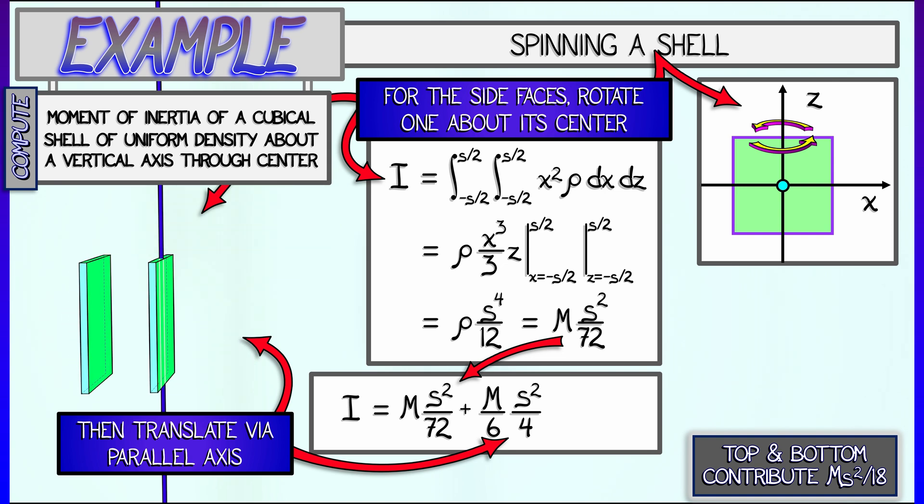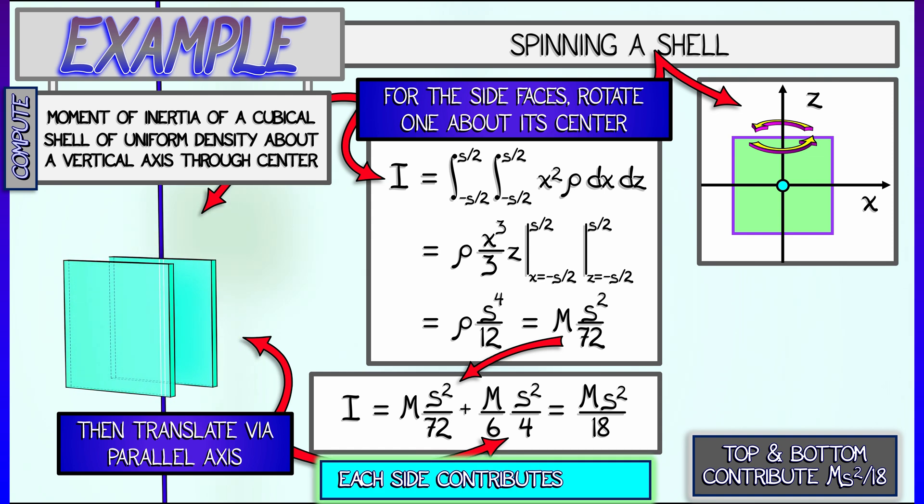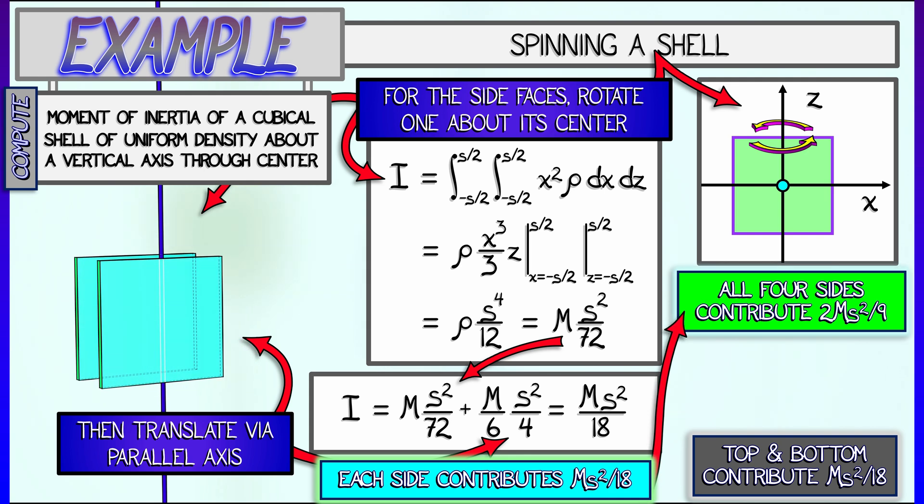Substituting in, expanding that out, simplifying that algebraically gives us an answer of ms squared over 18. That's for one side plate. For four side plates, what we get is a net total of 2 ninths ms squared.